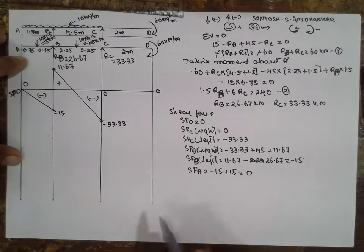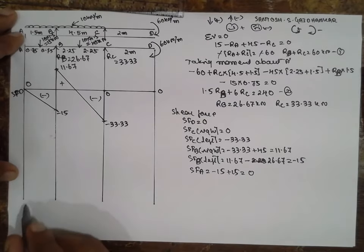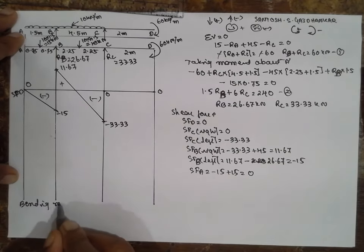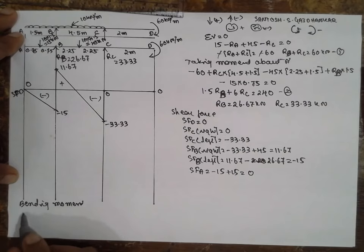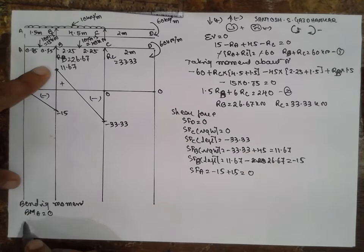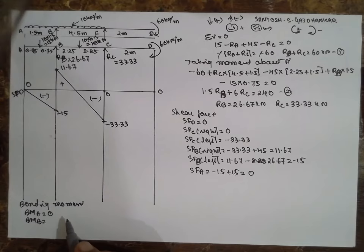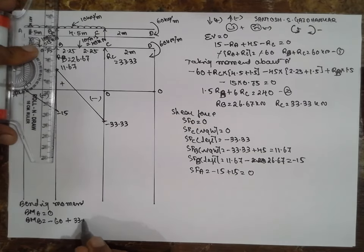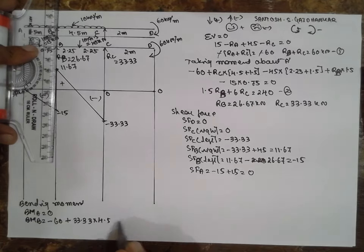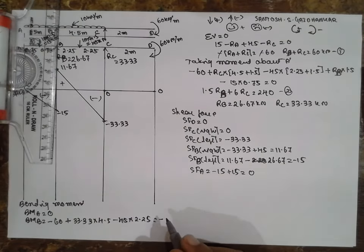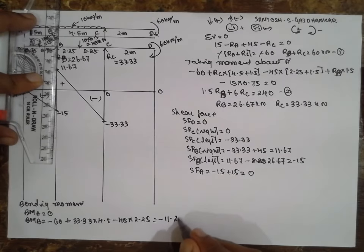Now go for bending moment. Bending moment at A equals zero. Bending moment at D equals zero. Bending moment at B: the couple comes into picture — minus 60, plus 33.33 into 4.5, minus 45 into 2.25. Calculating gives minus 11.265 kilonewton meter.